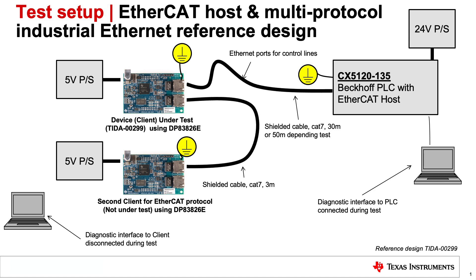Here a block diagram of the EtherCAT system is shown. This system consists of one host and two client devices using the DP83826E as the Ethernet PHY. This system setup has been used to test EMC immunity of the DP83826E.